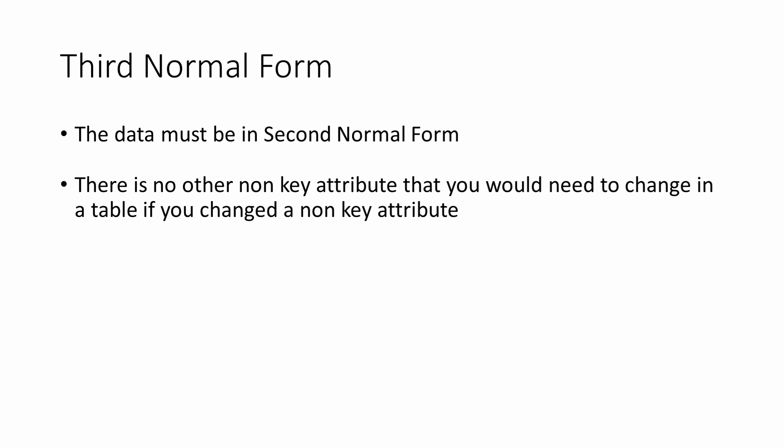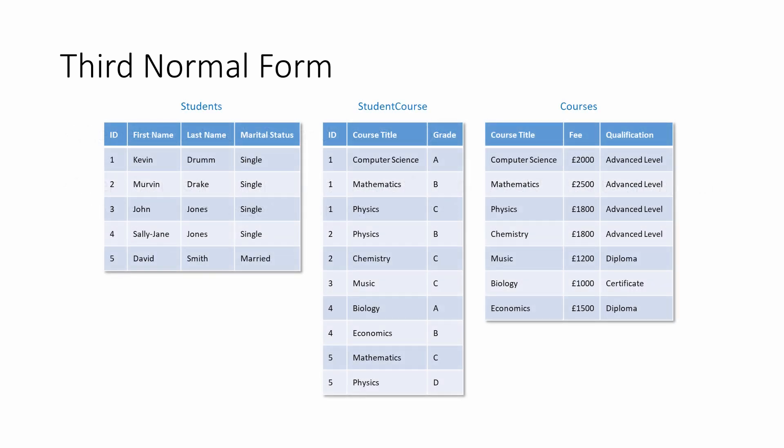To get these tables into third normal form, they must already be in second normal form, which they are. Now you need to ensure that there are no transitive functional dependencies. In this case there aren't any, so these tables are already in third normal form as well.